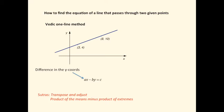Conversely, for the coefficient of y, namely b, we find the difference of the x coordinates. 8 minus 3 is 5.